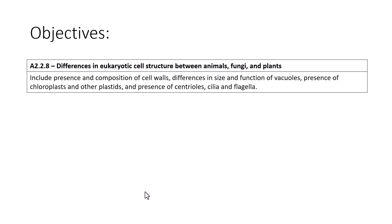Hey guys, Mr. P here. In this video we're going to discuss differences among eukaryotic cells, specifically understanding A2 to 8, which covers differences in eukaryotic cell structure between animals, fungi, and plants. We're going to include the presence and composition of cell walls, differences in the size and function of vacuoles, the presence of chloroplasts and other plastids.